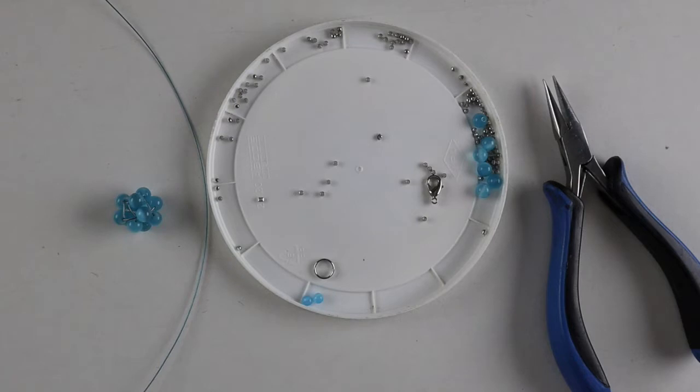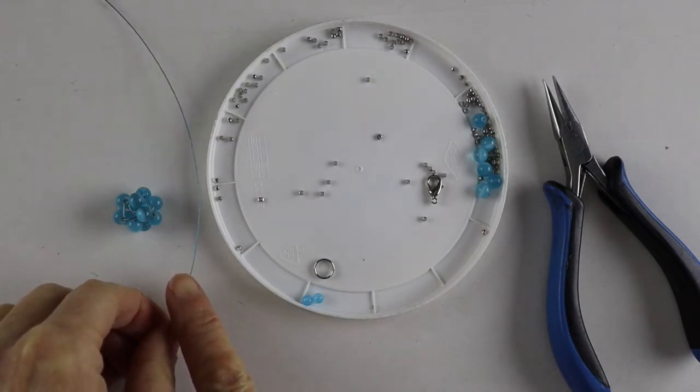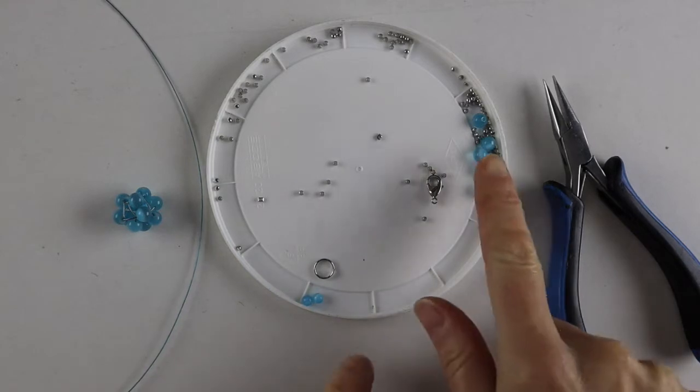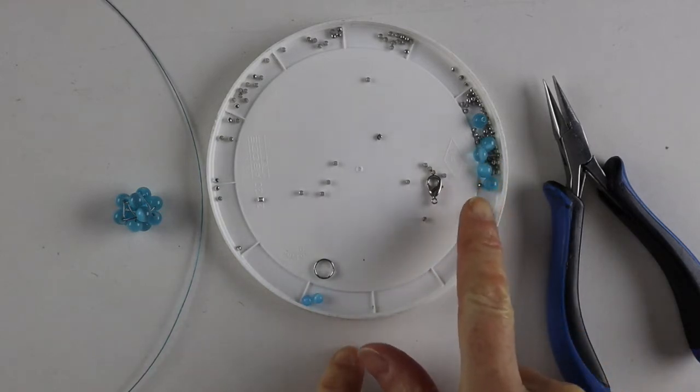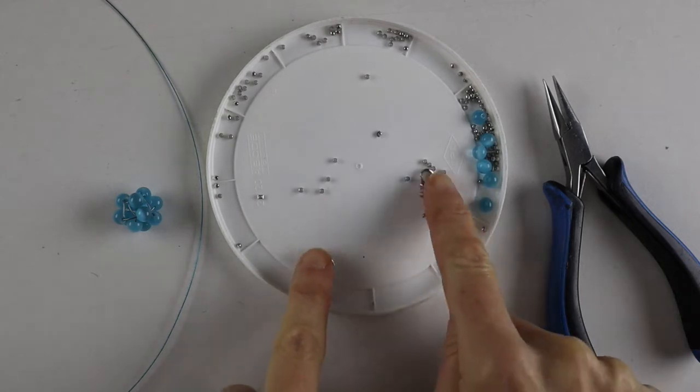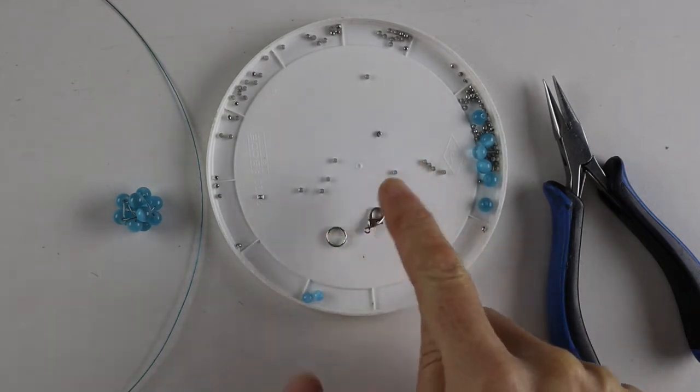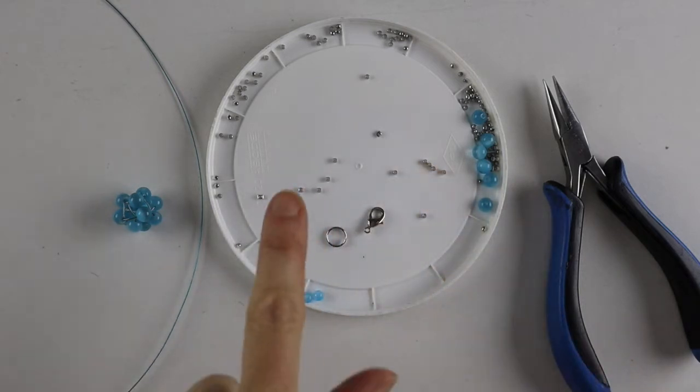So for this project you're going to need your cluster bead from the previous video. I'll link it up below. You'll need tiger tail. This one is turquoise but you can use the traditional silver colored tiger tail. You'll need six millimeter beads, two four millimeter beads, and your clasp, so the split ring and the lobster clasp, and your two millimeter crimps.